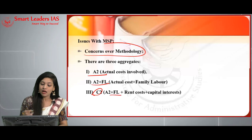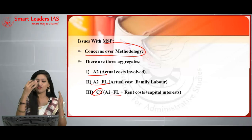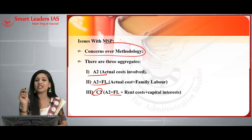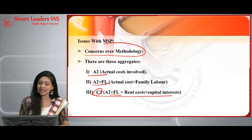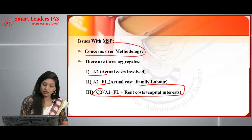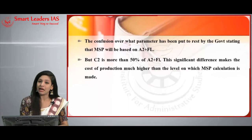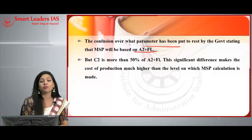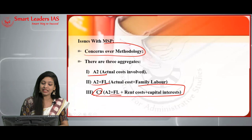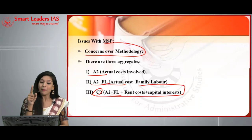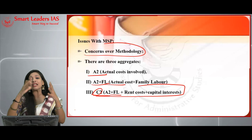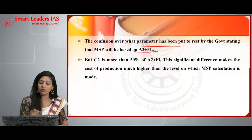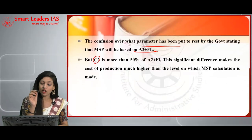There is confusion over which parameter to use. The government has stated that MSP will be based on A2+FL — actual cost and family labor — whereas C2 is more comprehensive, including rent and capital interest. C2 is more than 50% above A2+FL because it incorporates additional factors. This confusion means that the comprehensive C2 should actually be taken into consideration for a more accurate calculation.